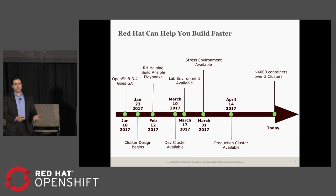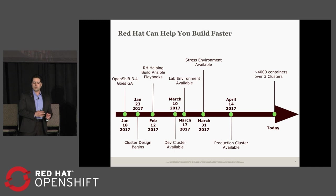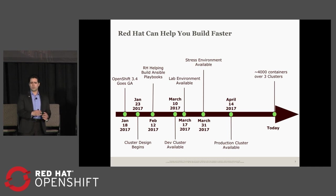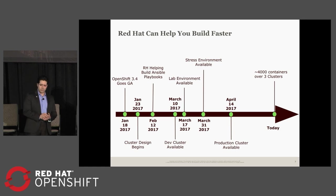Today we have three clusters. We broke up our dev, stress, and development clusters, which are three distinct clusters. Across those clusters we have about 4,000 containers running. Production has around 1,500 across two data centers. So we were able to achieve, at least from a deployment perspective, a very high rate of deployment.